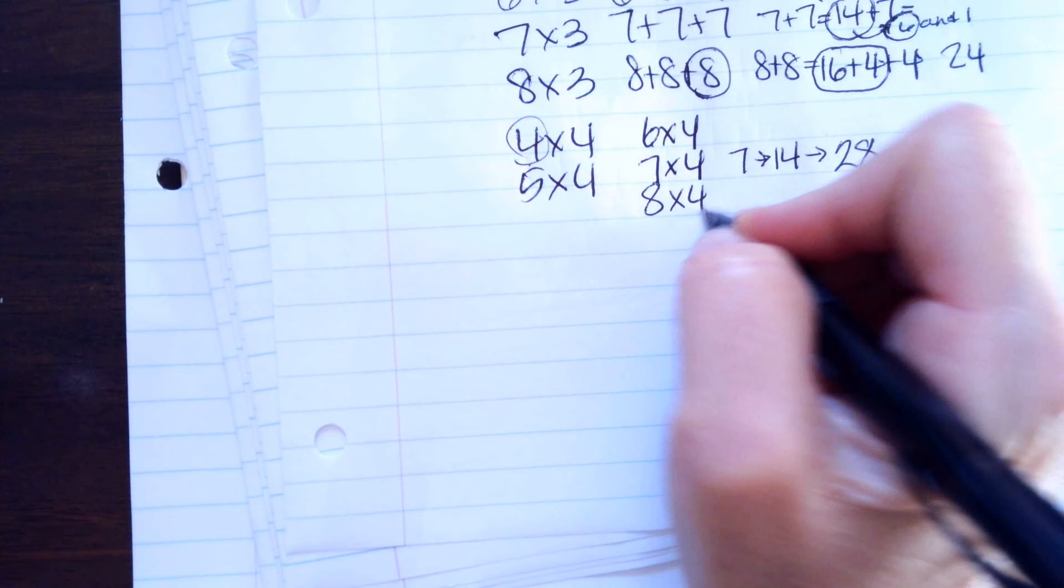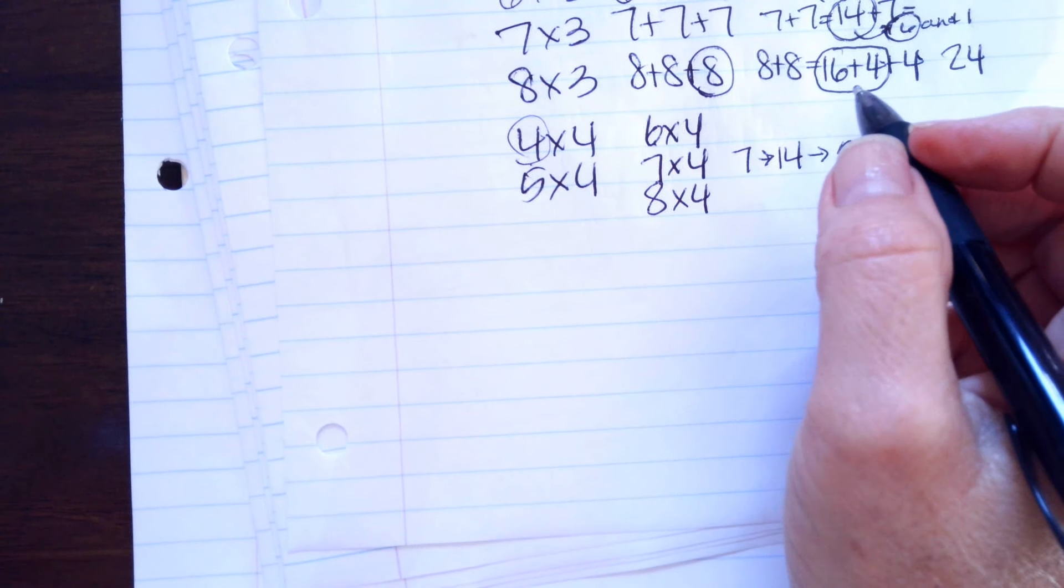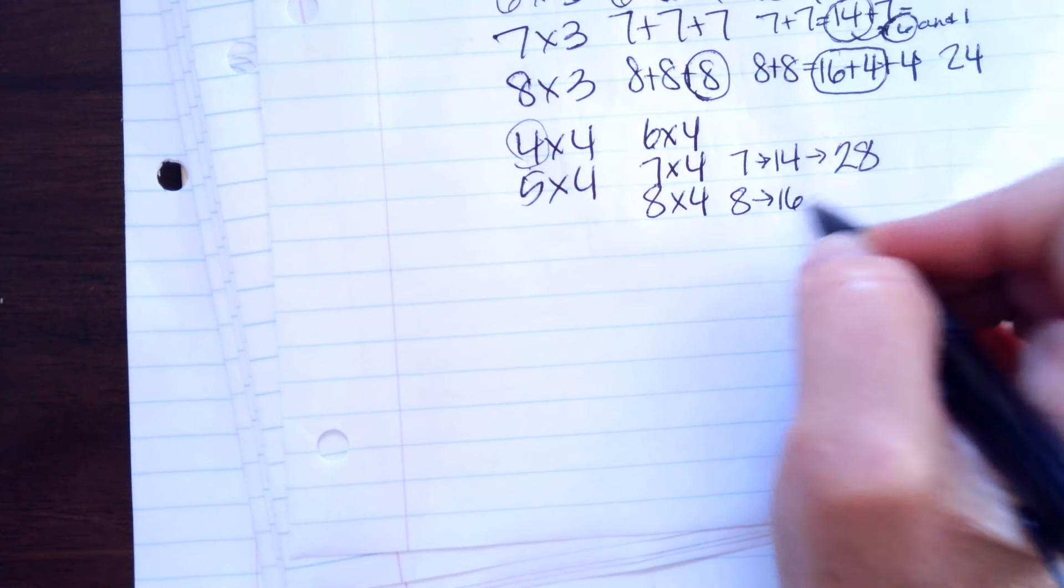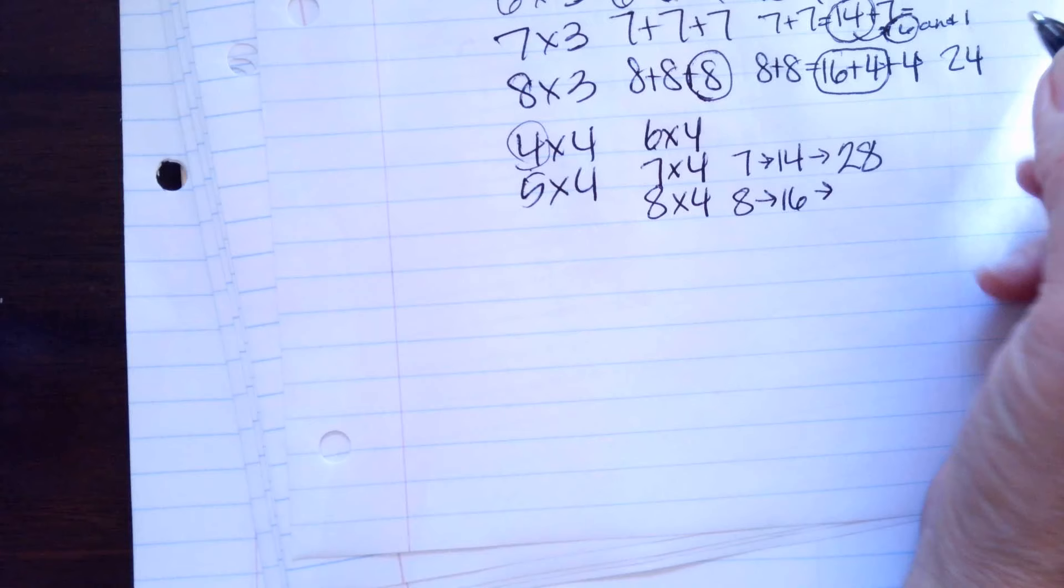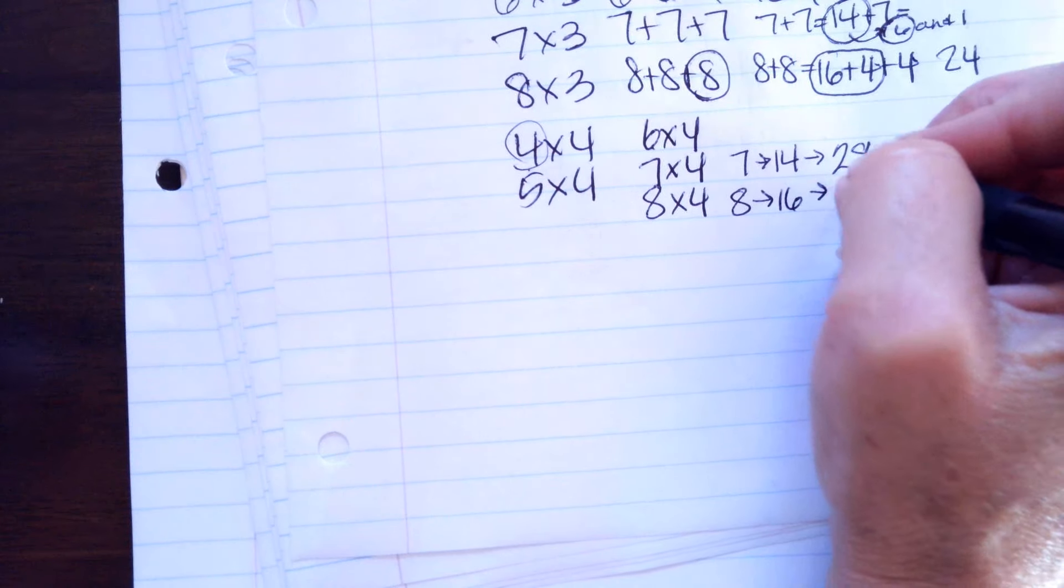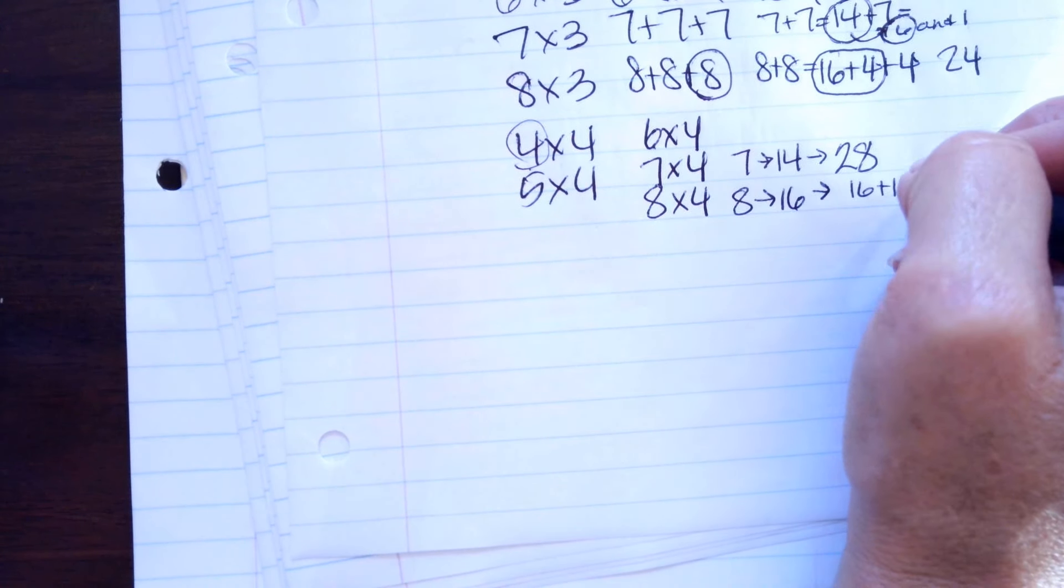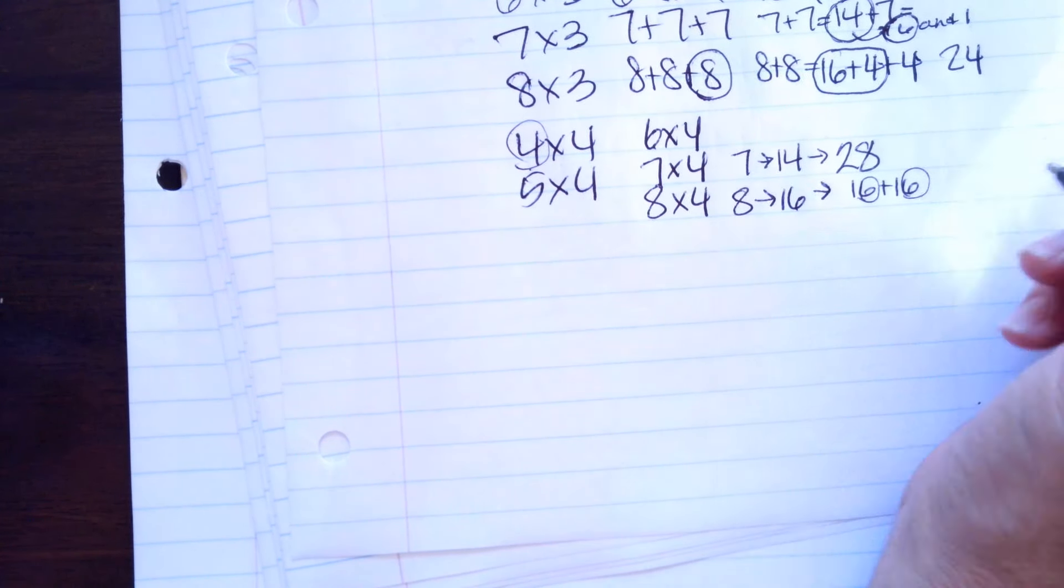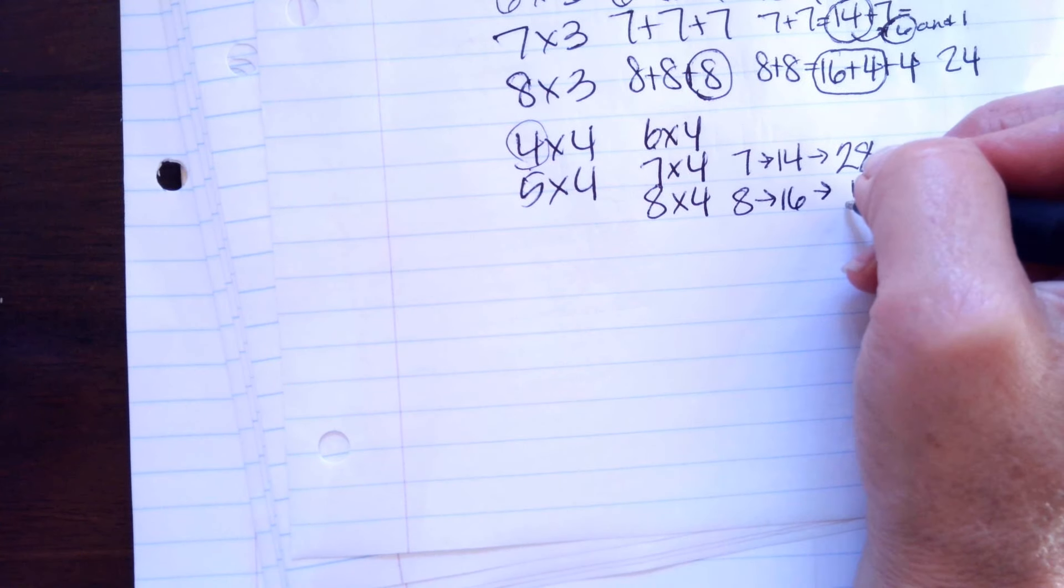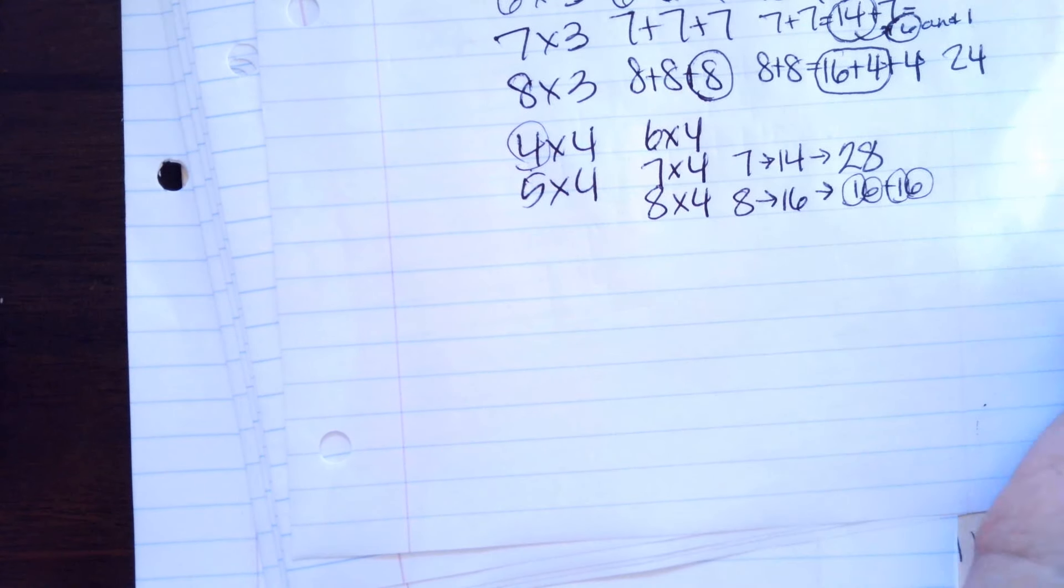8 times 4, we're going to double it and double it again. 8 doubled is 16 and then 16 plus 16. Well, I know that 6 plus 6 is 12 plus 10 is 22 plus 10 is 32.